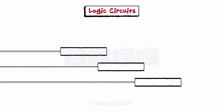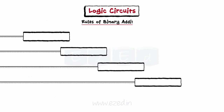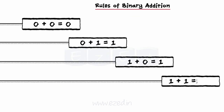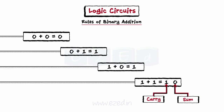We know the basic rules of binary addition: 0 plus 0 equals 0, 0 plus 1 equals 1, 1 plus 0 equals 1, and 1 plus 1 equals 10, where we get the sum as 0 and carry as 1.